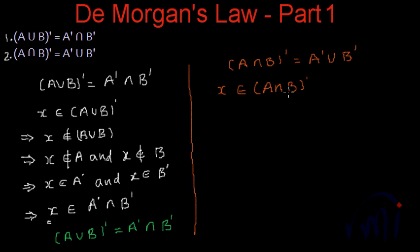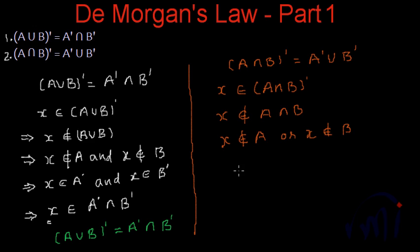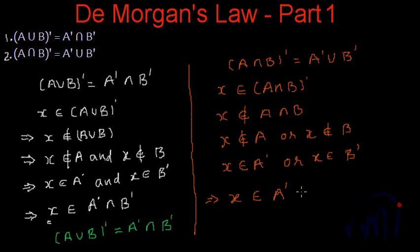If X is an element of A intersection B complement, that means X is definitely not an element of A intersection B. If X is not an element of A intersection B, there are possibilities that X is not an element of A or X is not an element of B. That means X is an element of A complement or it is an element of B complement. That means it is either in A complement or it is there in B complement, so X is definitely there in A complement union B complement.